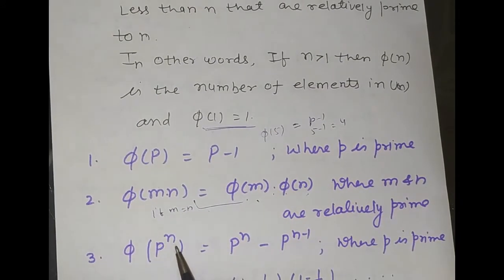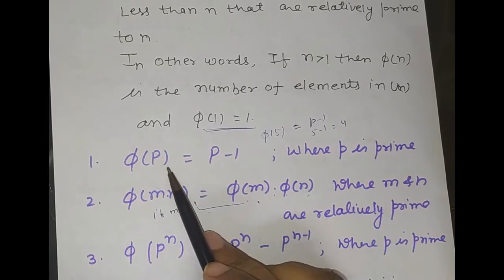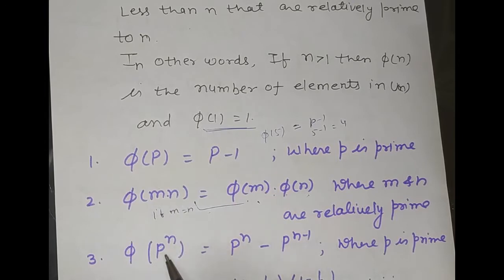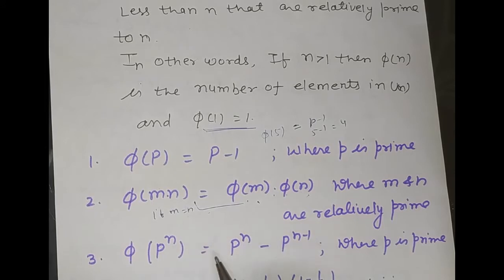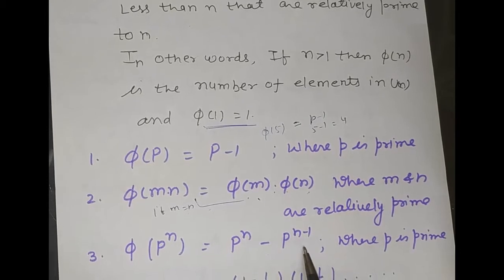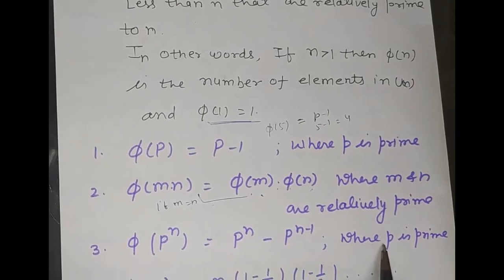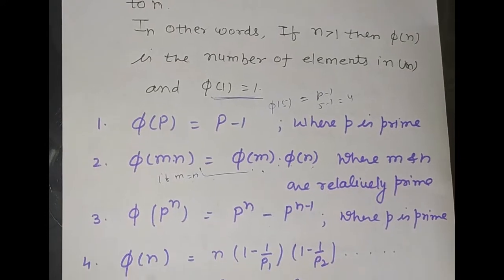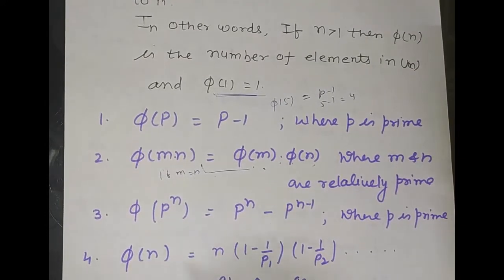The third formula is for p raised to the power n. When we had a single prime earlier, now for prime powers: φ(p^n) = p^n − p^(n−1), where p is a prime number. The last formula is very important.